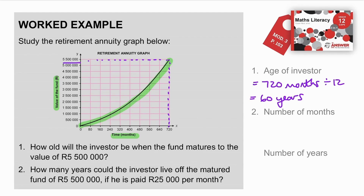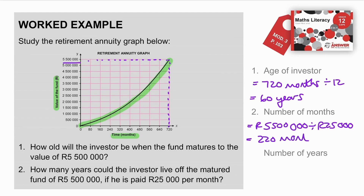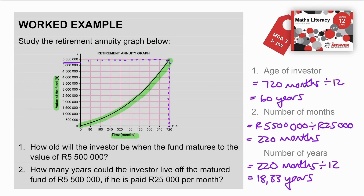Question 2: How many years could the investor live off the matured amount of R5,500,000 if he is paid R25,000 per month? The total payout value of R5,500,000 divided by the monthly payout of R25,000 gives 220 months. Converting to years: 220 ÷ 12 = 18.33 years. There is no need to convert the decimal further unless the question asks for years and months. So this person can live off that amount for just over 18 years.